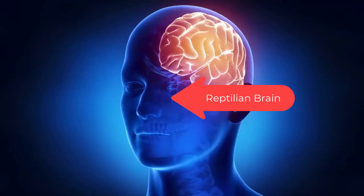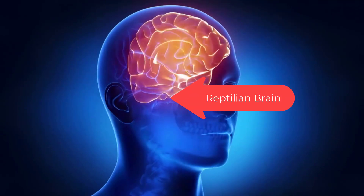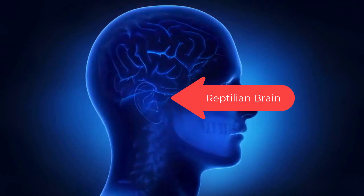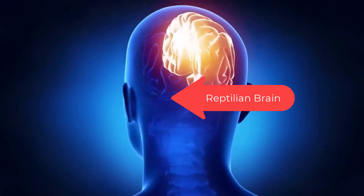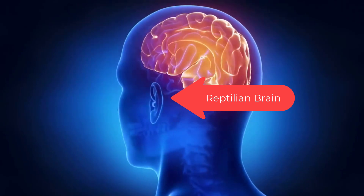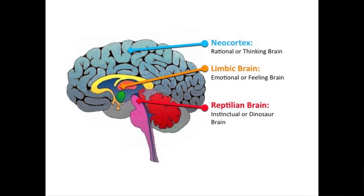The old brain, the reptilian brain, decides. It can take into account input from the other brains, but it can also decide faster than the blink of an eye, then use the other brains to justify the decision. The reptilian brain is visual and hardwired into the brain stem.